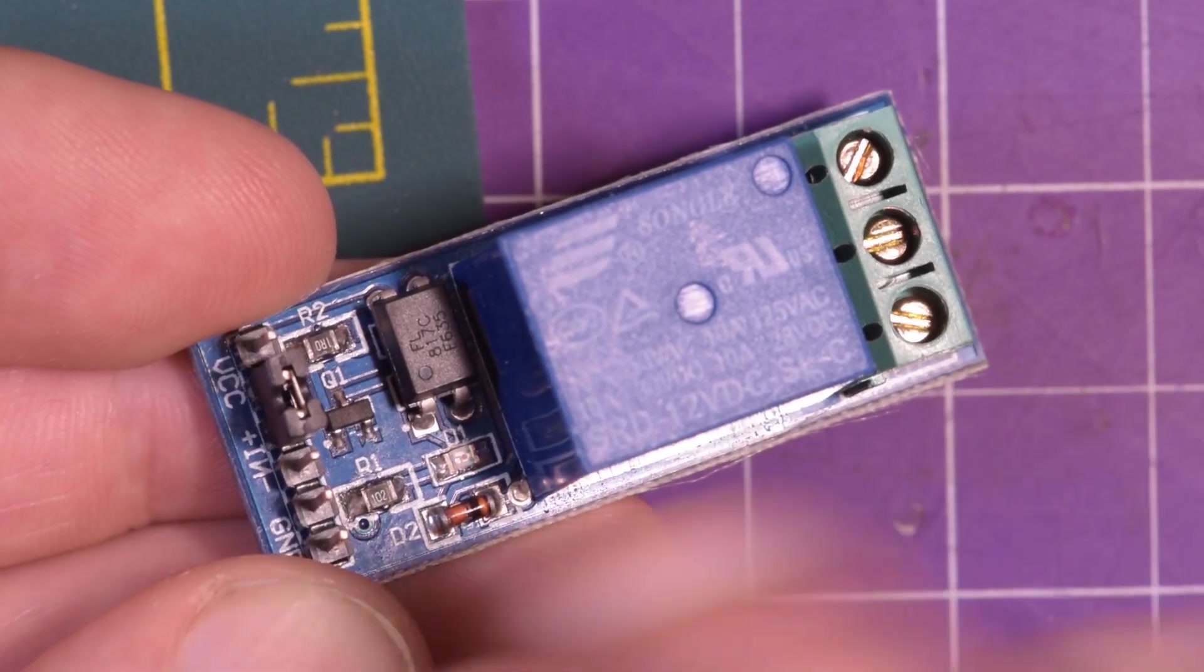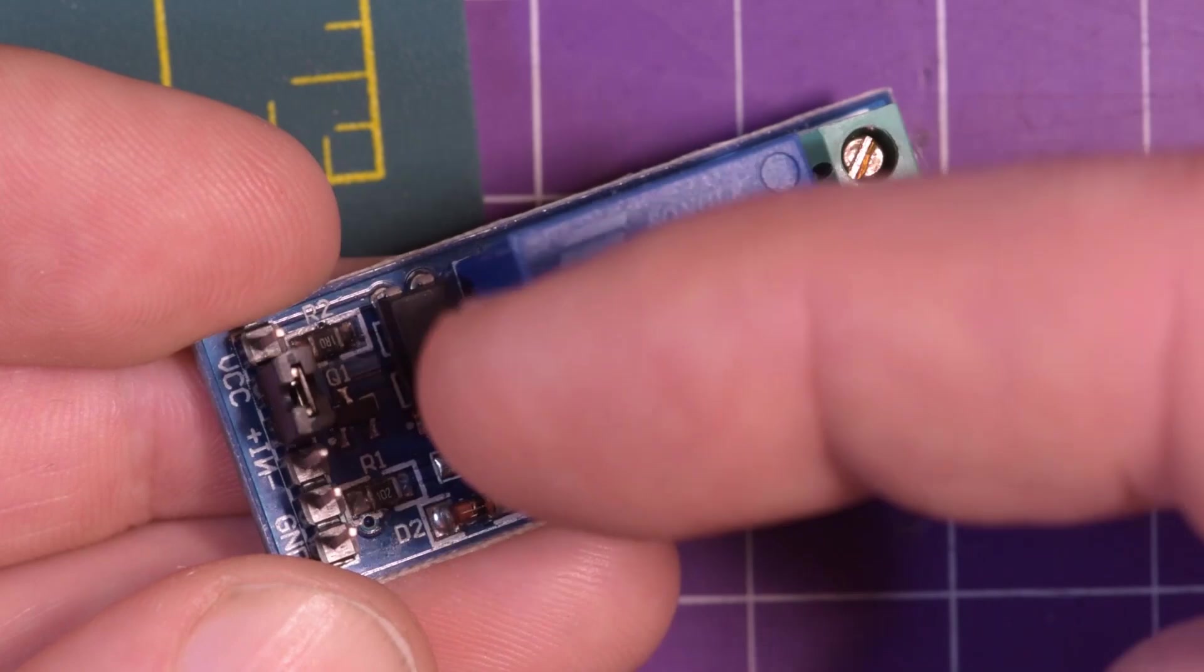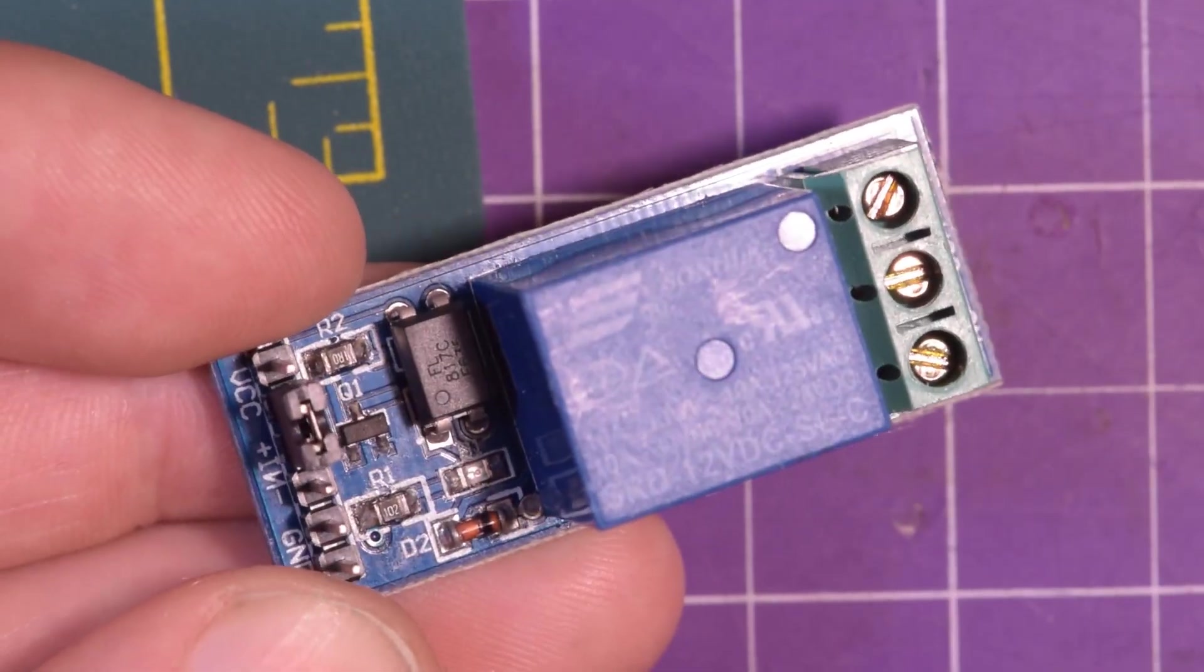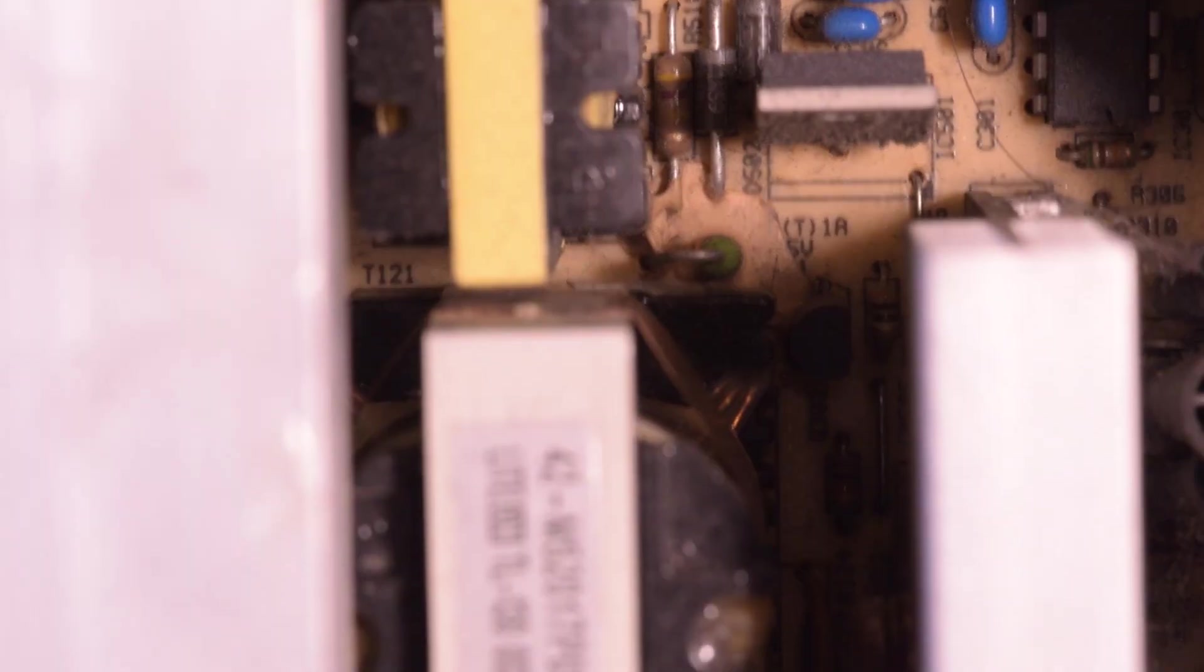You can use a freewheeling diode to kind of recirculate the voltage back into the coil. However, if that diode ever breaks down, you're done for. This opto isolator means there's a literal gap of space between the two, so if the opto isolator does fail, you're not ruining your Arduino.